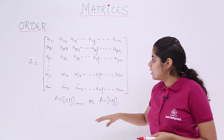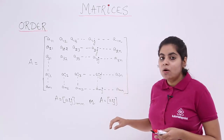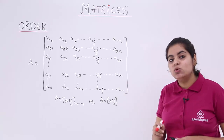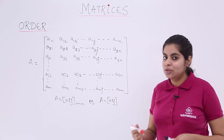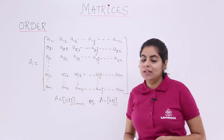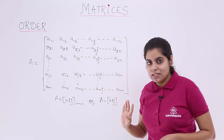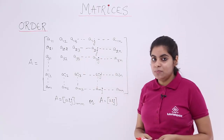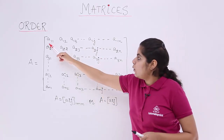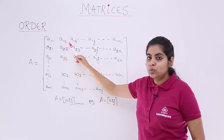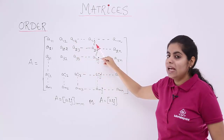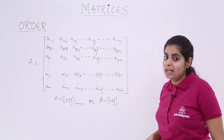I have drawn and represented one matrix in front of you. The name of the matrix is usually denoted by a capital letter, so here the name of the matrix is capital A. This is a very big matrix with many rows and many columns. As you see, I have been writing a11, a12, a13 and so on till a1j and a1n.